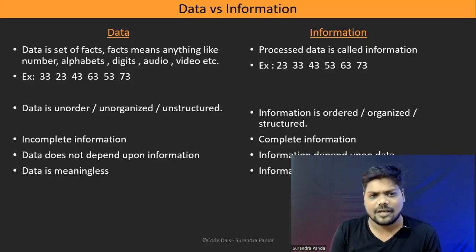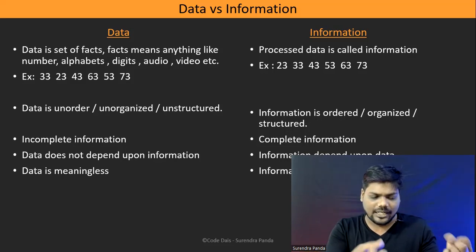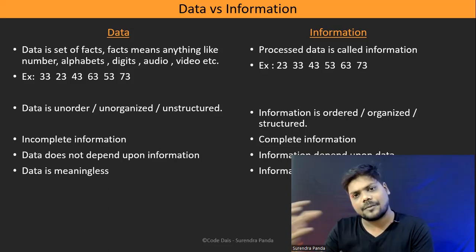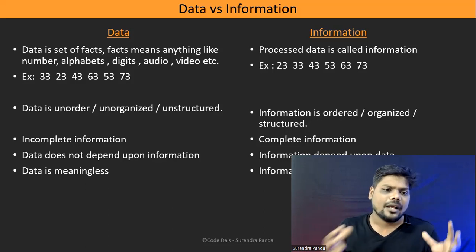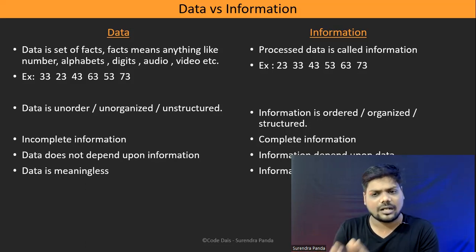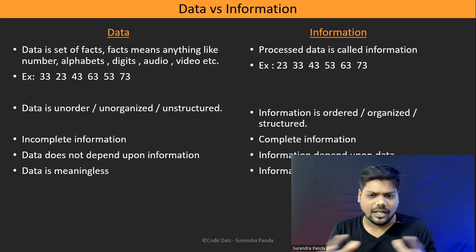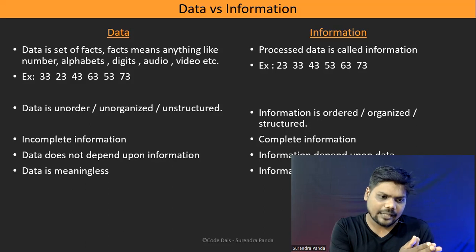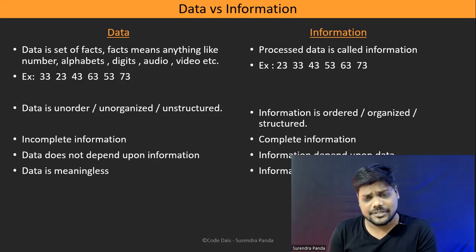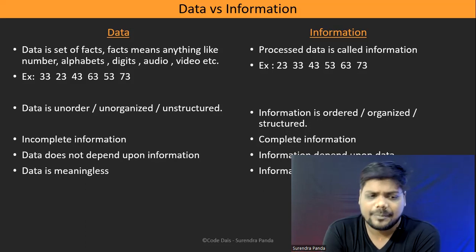So these are the key points about data and information. Data is a collection of facts — things like numbers, alphabets, digits, audio, video, etc. Information is processed data. Data is unordered, unorganized, unstructured; information is ordered, organized, and structured. Data is incomplete; information is complete. Data does not depend on information, but information depends on data. Data is less meaningful; information is meaningful.